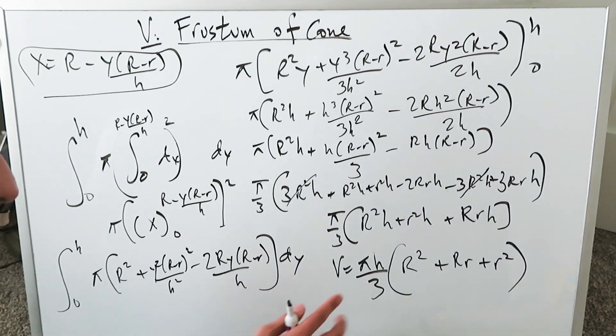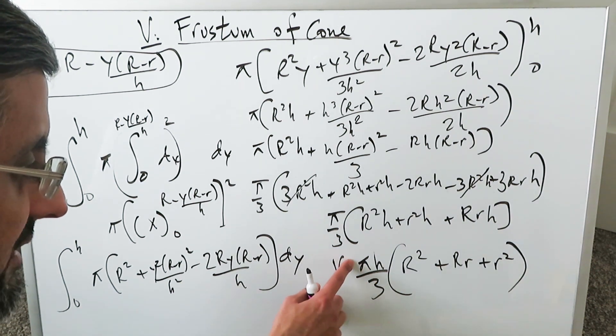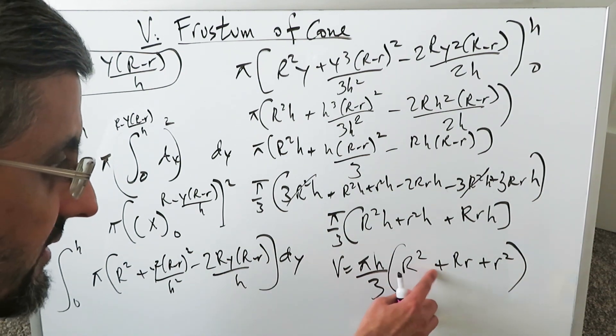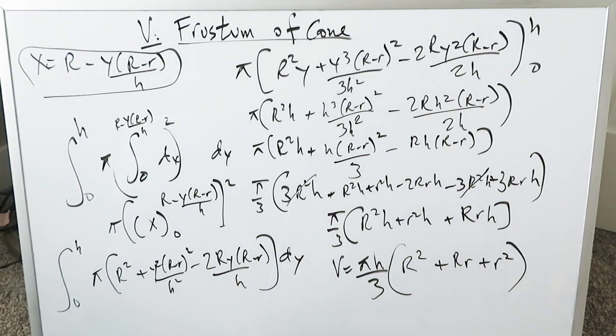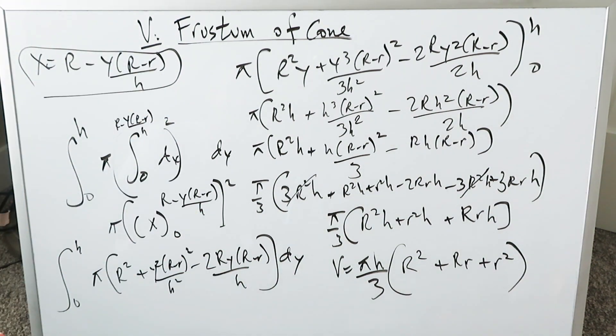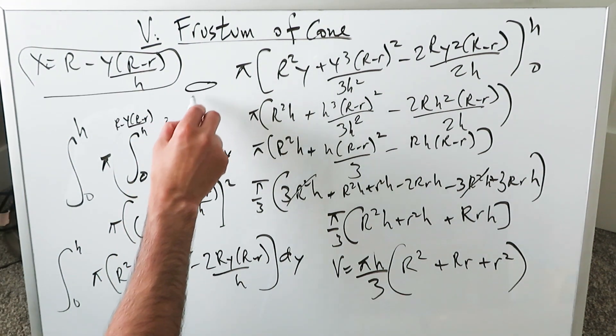This is a very correct legitimate formula. Volume of a frustum of a cone is pi times height divided by 3 parentheses r squared plus r r plus r squared. You know the capital r represents a major radius of the larger dimension base. The smaller case r represents the radius, the minor radius of the upper surface of the frustum. And you know it looks something like this.